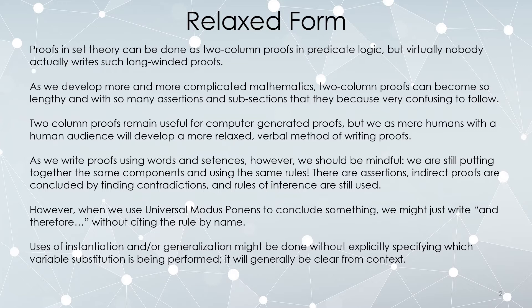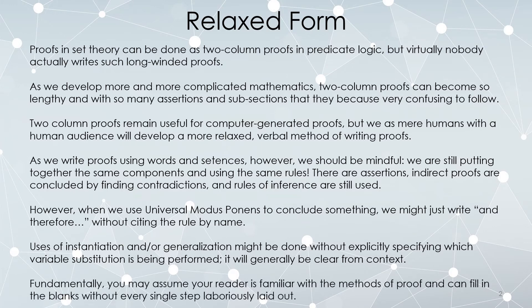Uses of instantiation or generalization may not be explicitly stated, and it might be clear from context. They still have to follow the same rules, however. If you have a universally quantified statement, you can instantiate it however you want. But if you have an existentially quantified statement, you can only instantiate it with a completely new variable, and similarly for generalization. So while you don't necessarily write out all the details, they have to be lurking in the background. Fundamentally, you're assuming the person reading your proof knows how proofs work and can fill in the blanks.